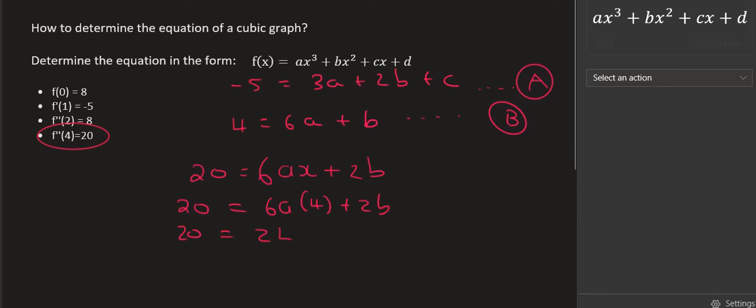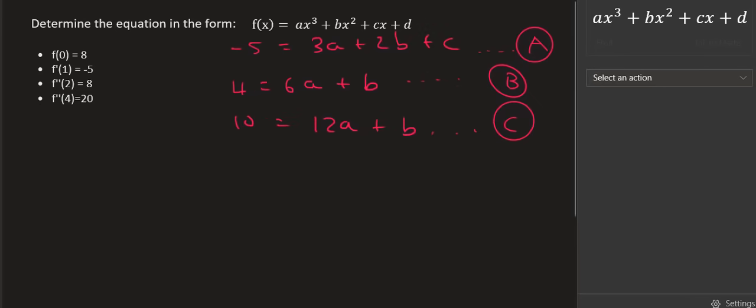And so that's going to give us 20 equals 24a plus 2b. I'm just going to divide everything by 2. You don't have to, but it just makes life a bit easier. And there we have another equation. And so there we have it. So have a look at this. We're not going to look at this one over here just yet.